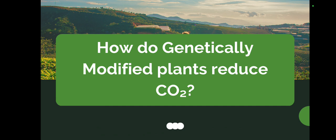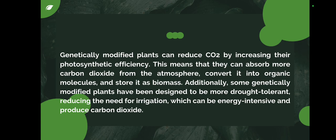How do genetically modified plants reduce CO2? GM plants can reduce CO2 by increasing their photosynthesis efficiency. Photosynthesis is the process by which plants take sunlight and synthesize glucose. During this process CO2 is absorbed. Plants use this CO2 to prepare their own food, meaning they can absorb more carbon dioxide from the atmosphere, convert it into organic molecules, and store it as biomass.